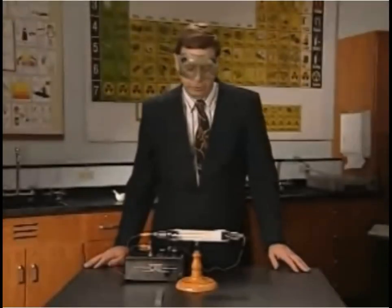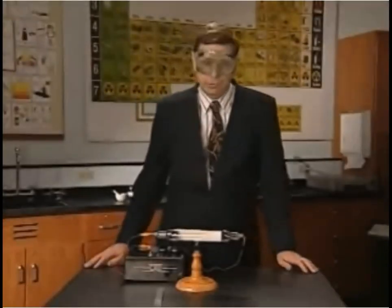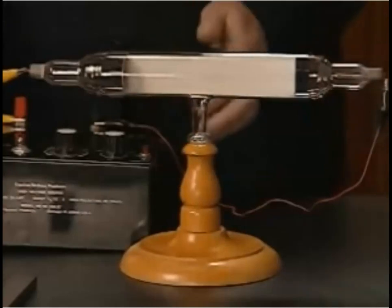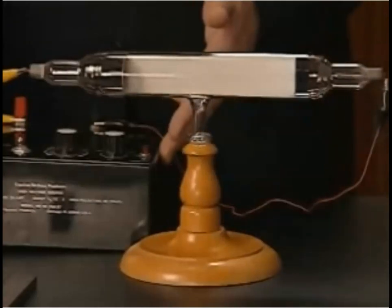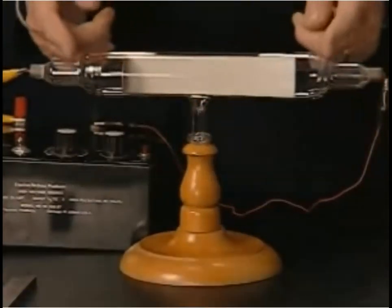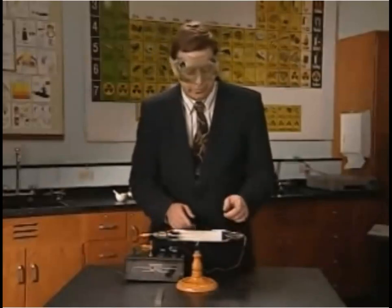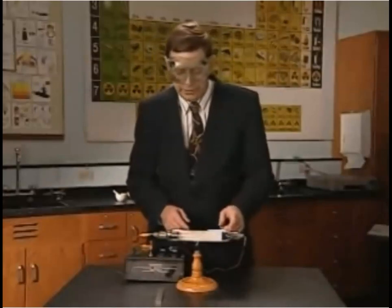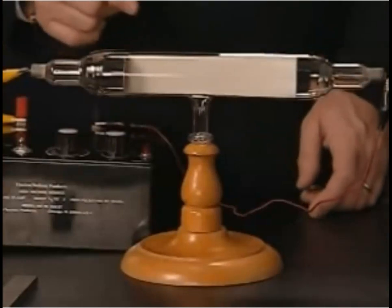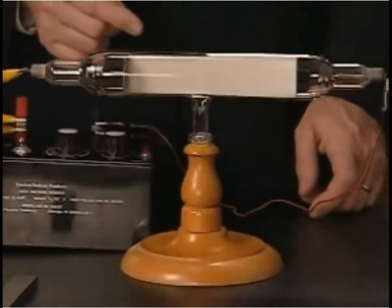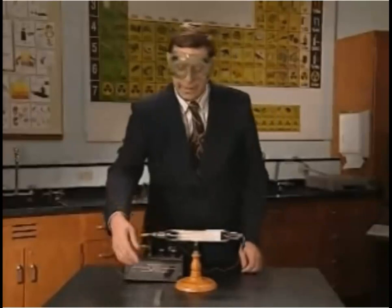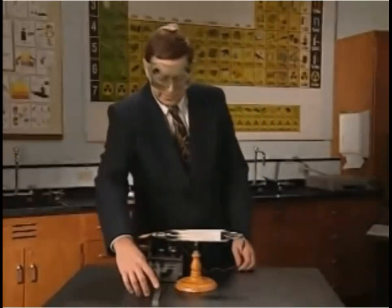To demonstrate a Crookes tube — a cathode ray tube — we need a high voltage power source. We need the Crookes tube, which has a metal cathode, a metal anode, a screen coated with a phosphorescent material that gives off light when struck by electrons, and a bar magnet.